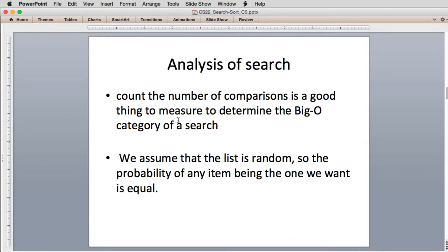Now with this type of search, how do you measure how long it takes? Since the code is going to vary a lot between searches, one thing that is constant is you're always going to be doing comparisons to eventually find the item you want. So traditionally in computer science, we count the number of comparisons. This is a good thing to measure to determine what Big O performance we have. We assume that the list is random, which implies that the probability of any item being the one we want is equal.